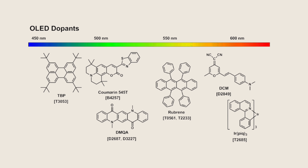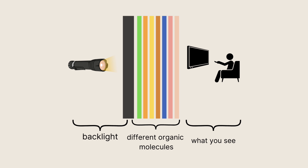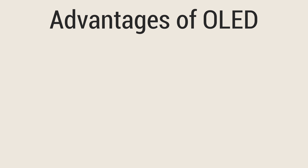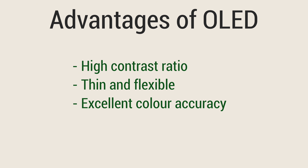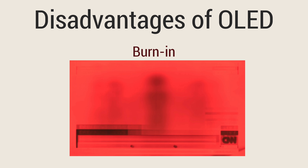Up next we have OLED displays, which stands for organic light-emitting diode. OLED screens use organic compounds that emit light when an electric current passes through them. Each pixel emits its own light, resulting in true blacks and eye-popping colors. OLED displays have a very high contrast ratio, they are thin and flexible, and come with excellent color accuracy.